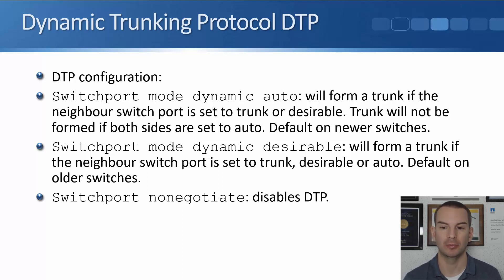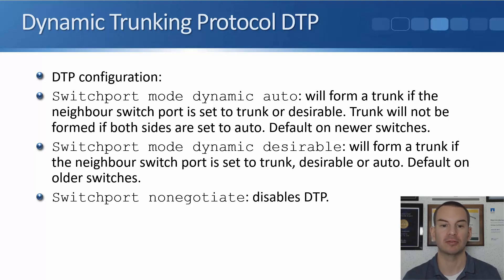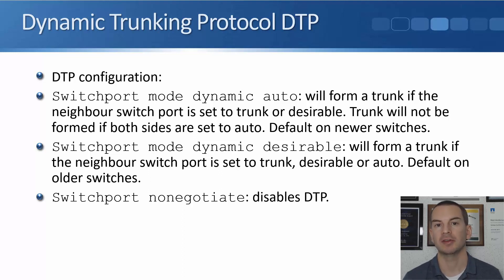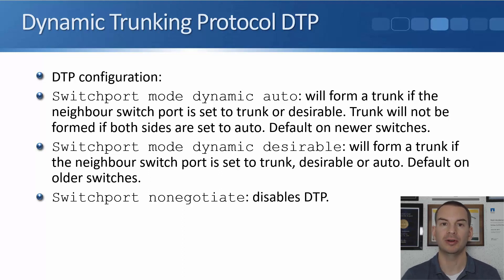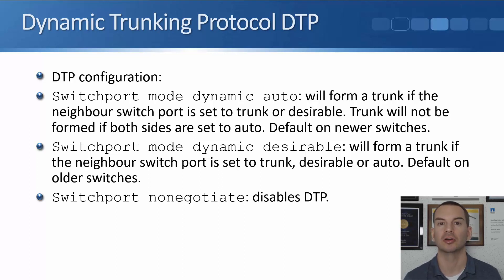The next option is 'switchport mode dynamic desirable'. That will form a trunk if the neighbor switch port on the other side is set to trunk, desirable, or auto. This is the default on older switches, so with older switches when you plug them into each other they're set to dynamic desirable on both sides, so they will form a trunk by default.